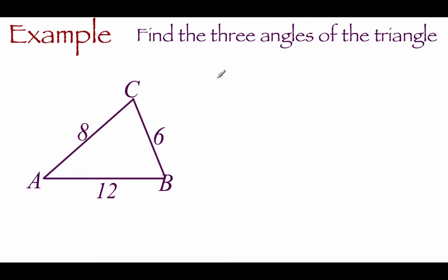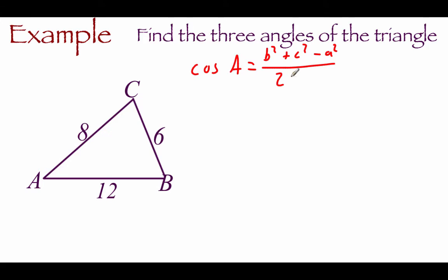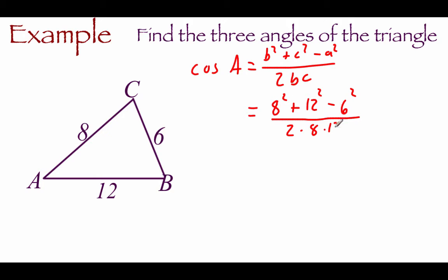In this example, we're given triangle ABC. We've got all three sides of our triangle, and we're going to find the three missing angles. Let's start with angle A, using the alternative form of the law of cosines. It says the cosine of angle A is equal to B squared plus C squared minus A squared all over 2BC. Plugging in information from our triangle, side B is 8, so we go 8 squared plus 12 squared minus 6 squared, and on the bottom we've got 2 times 8 times 12.